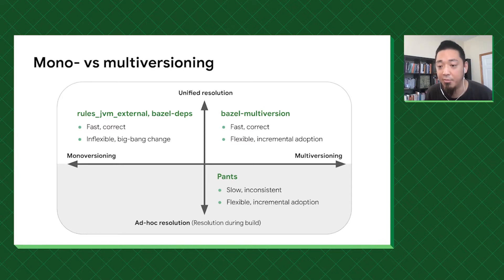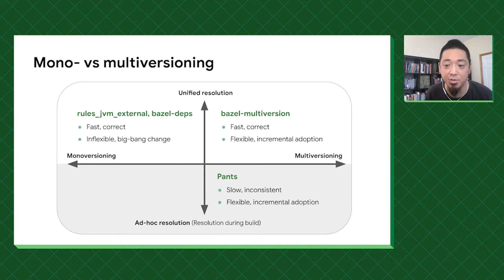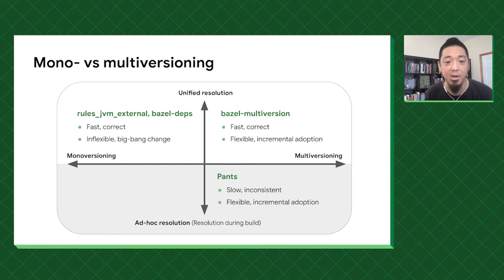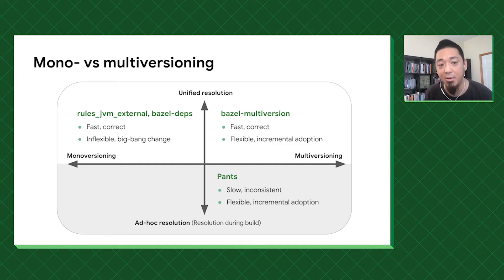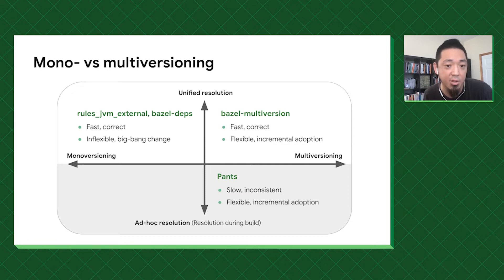We can think of these as two competing ways of thinking, but we can't really do ad hoc resolution by the design of Bazel, because that would be incorrect — the result would end up picking up things that are not part of the input. Forcing it would also squander the benefits of adopting Bazel, which is its ability to catch things more correctly. So as a combination, we're working on Bazel Multiversion, which takes the unified resolution of Bazel but implements the flexible incremental adoption of multiversioning.